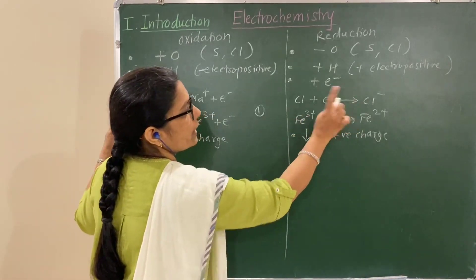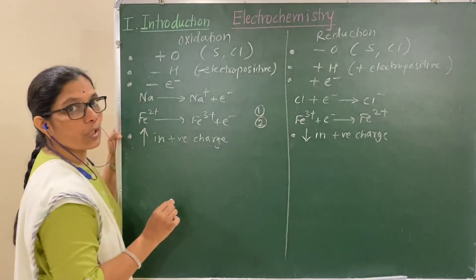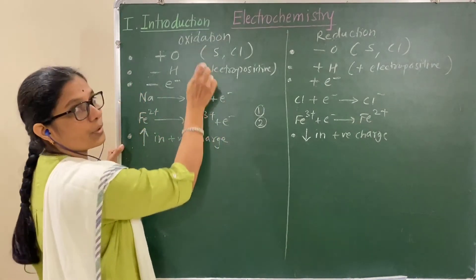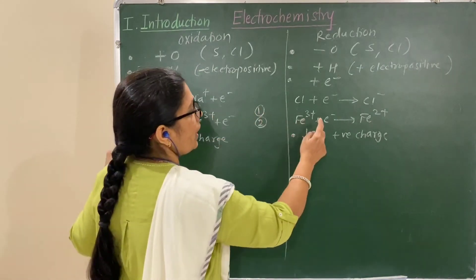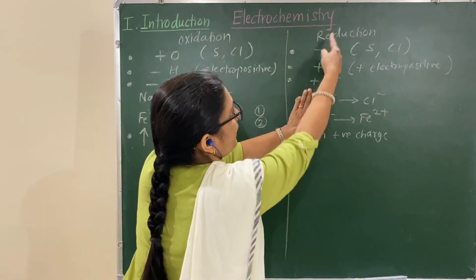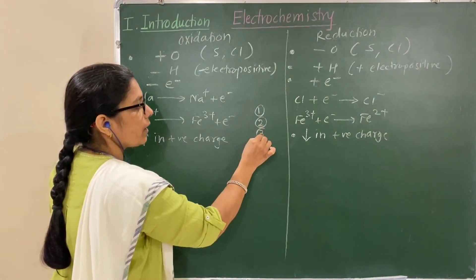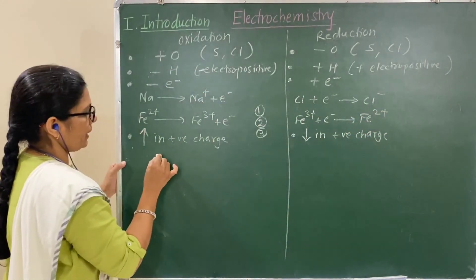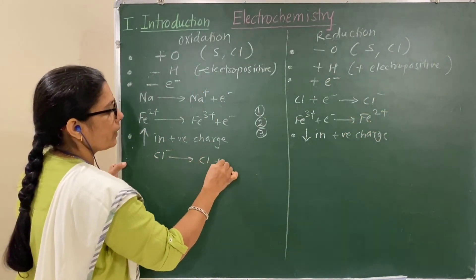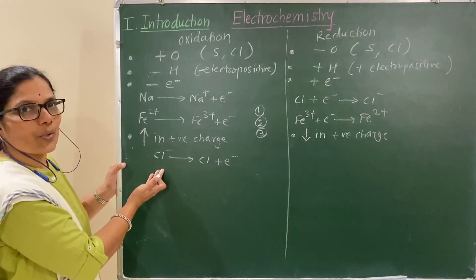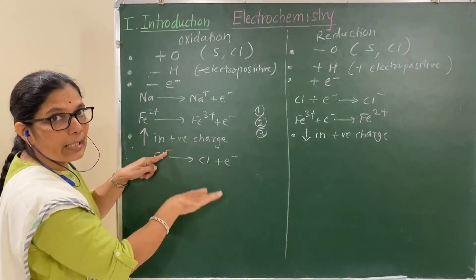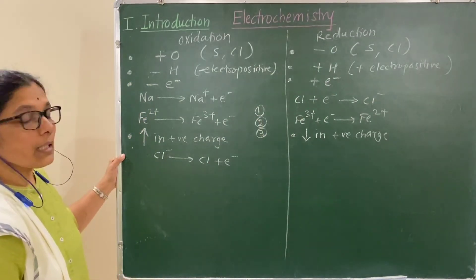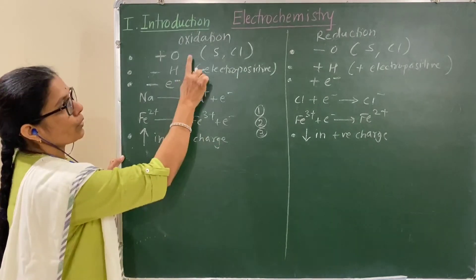Third trick: if you reverse the reduction reaction — say Cl⁻ loses an electron to become Cl — now the electron is on the right-hand side, so it is oxidation, and the negative charge decreases from −1 to 0. Conversely, if negative charge increases, that is reduction. Remember these points carefully for identifying oxidation and reduction.